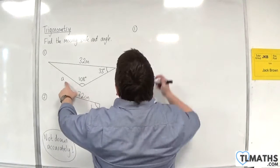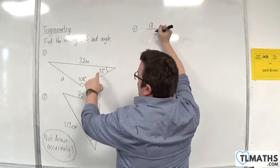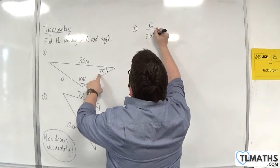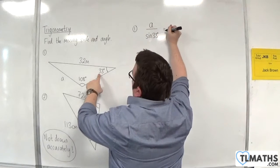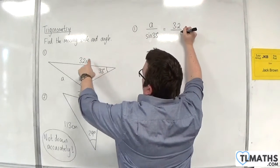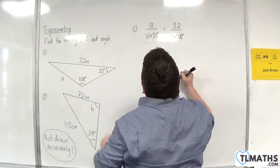The side a is what I want. So a over the opposite angle, sine of 33, must be equal to 32 over sine of 108.